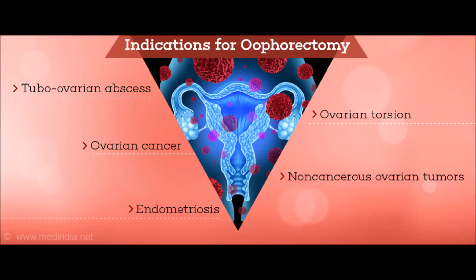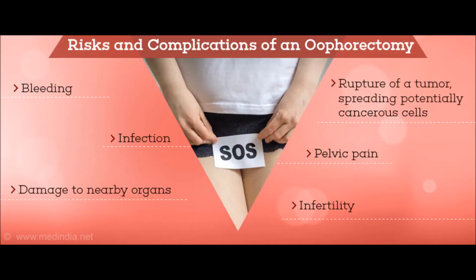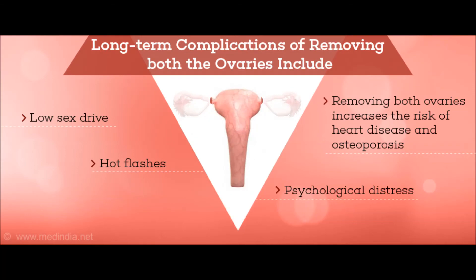Indications for oophorectomy include tubo-ovarian abscess, ovarian cancer, endometriosis, ovarian torsion, and non-cancerous ovarian tumors. Risks and complications include bleeding, infection, damage to nearby organs, rupture of a tumor spreading potentially cancerous cells, pelvic pain, and infertility.